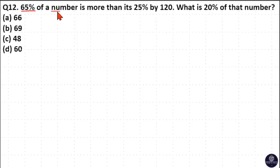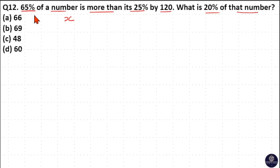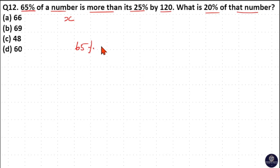65 percentage of a number is more than its 25 percentage by 120. What is 20 percentage of that number? Let us consider this number as x. The meaning of the first sentence is the difference between 65 percentage and 25 percentage of the number is 120.